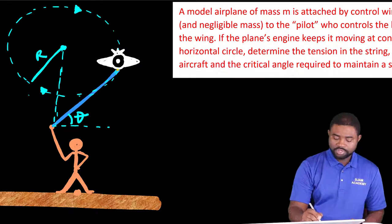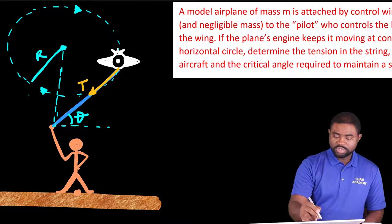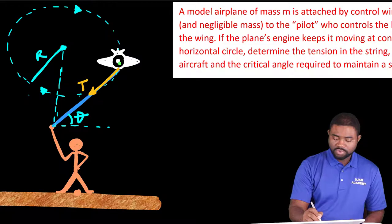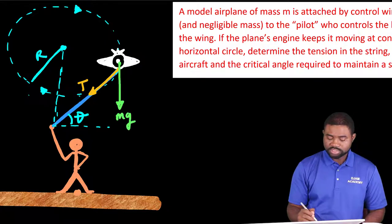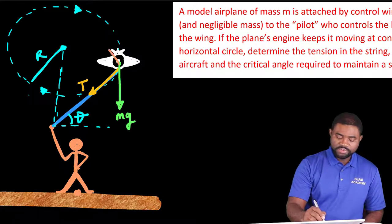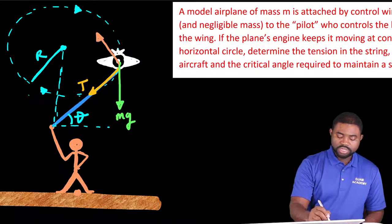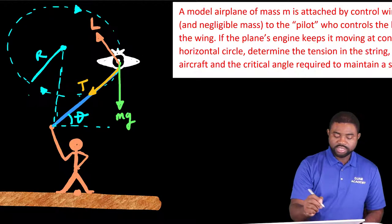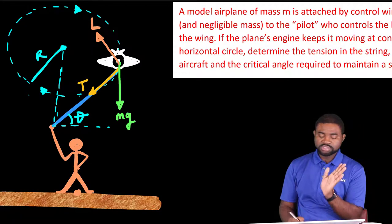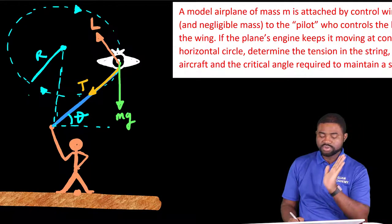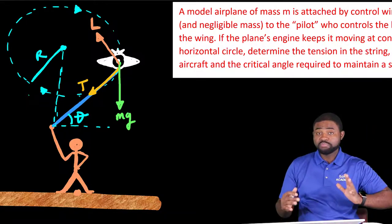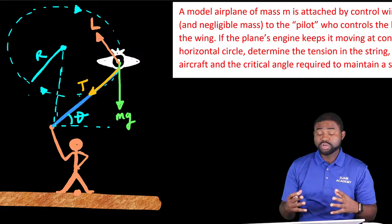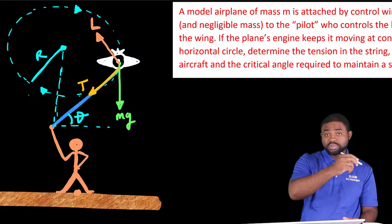We have the tension in the string, I'm going to call that T. We have the weight of the plane, that's mg. We have the lift, I'm just going to label the lift force L. Now, the lift is tilted towards the center of the circle because the horizontal component of the lift provides part of the centripetal force required for the plane to move around in that circle.